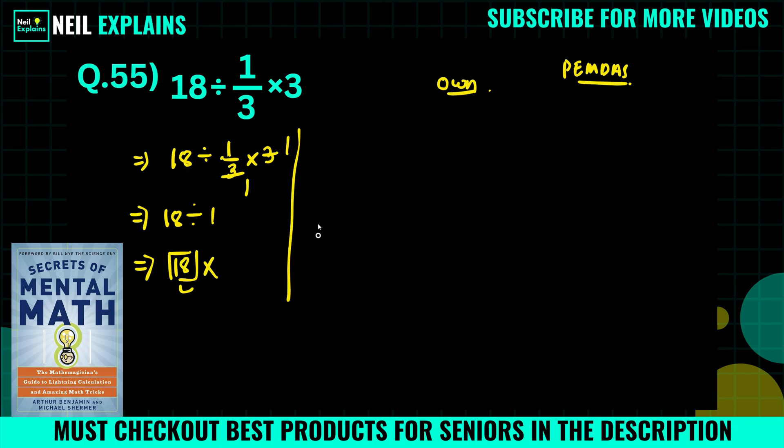So what is the right way? Here, 18 divided by 1/3 times 3. Because we can actually, PEMDAS is written like this: multiplication and division have the same priority, and in that case we have to operate left to right. Here two operations are there, that is division and multiplication.